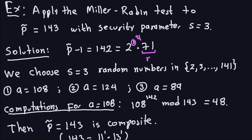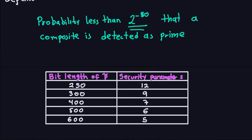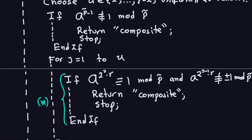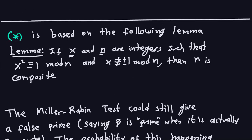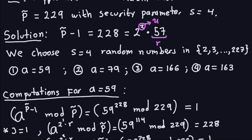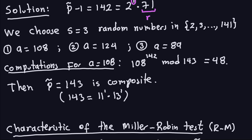Let's do the computations for the first one, a=108. If I do 108 to the 142 modulo 143, that gives me 48. That's not equal to 1, so I already know immediately that that number has to be composite. The conclusion is that 143 is not a prime number — it is composite. And in reality, 143 equals 11 times 13. The algorithm stops here because we already know the number is composite, and this is 100% certain.